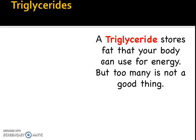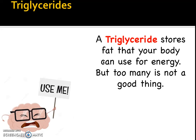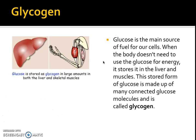Triglycerides are stored as fats that your body can use for energy. The issue is if you're not doing enough activity, you're going to store those as fatty deposits, and taking on too many triglycerides is bad for you — so you've got to use up those stores. Glycogen is one of the main sources of fuel for our cells. When the body doesn't need it, it stores glycogen within the muscles and also in the liver. It's the main source of our energy and is stored in the form of glucose; if glucose is not used, it converts itself into glycogen.